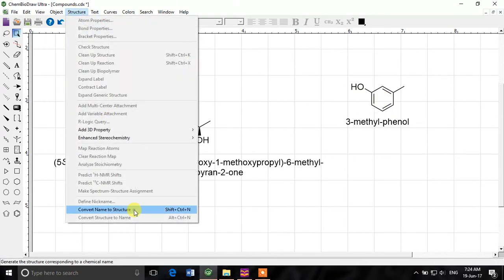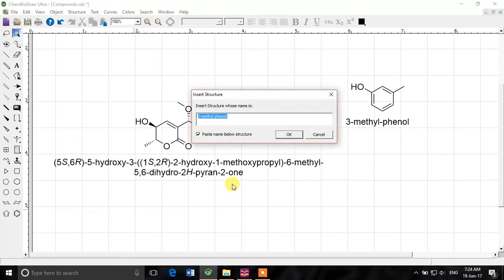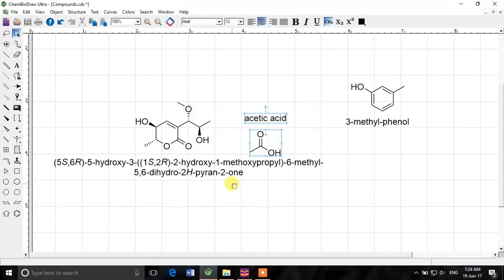Similarly if I go and write acetic acid. Does it draw it? Yes. So it's pretty good at converting the names to structures or converting the structures to names. So you can draw a structure and if you don't know the name you can ask ChemDraw. It can help you with that.